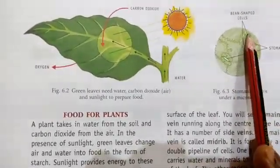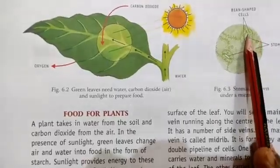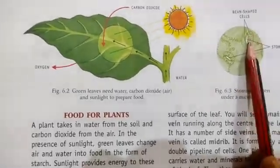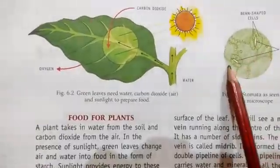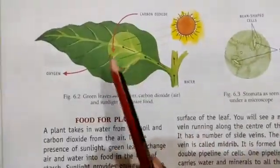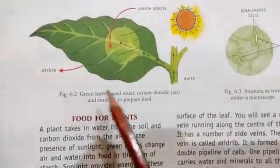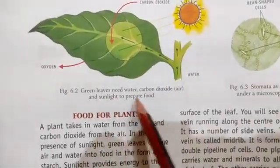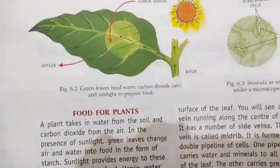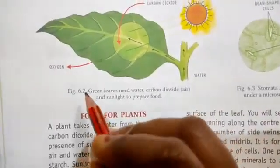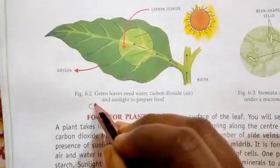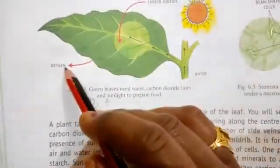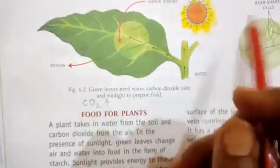What is the stomata? The outer cells are called bean-shaped cells — these are guard cells. Green leaves need water, carbon dioxide, and sunlight to prepare food. Carbon dioxide, CO2, is absorbed from the atmosphere through the stomata.